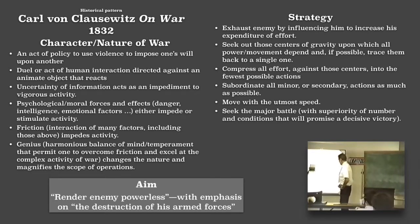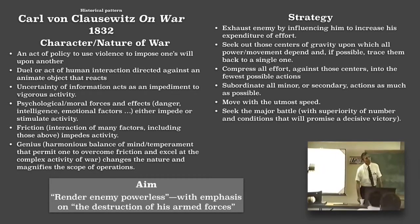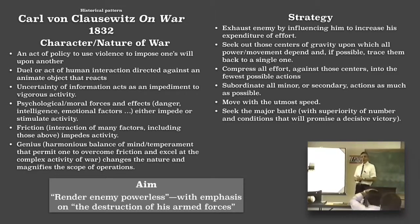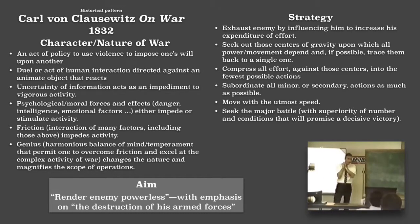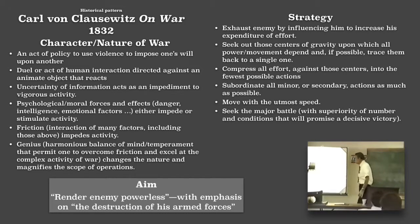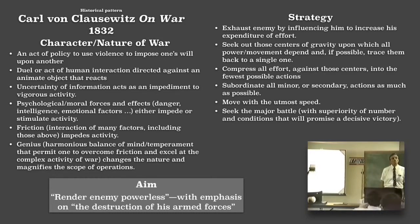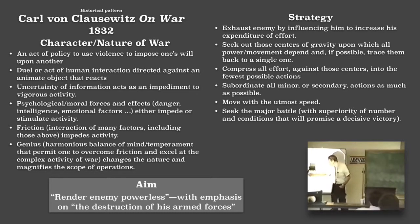What we find out is that Clausewitz is involved very heavily on the character and nature of war. And he ends up with the same statement: war is an act of policy — use violence to impose one's will upon another. If you think about that, you recognize you've got an opponent you're working on — it's not just some inanimate object. He makes the point: it's a duel, an act of human interaction directed against an animate object that will react. And if you don't know that, that act adds what he calls uncertainty. Uncertainty of information acts as an impediment to vigorous activity — if you're uncertain, you have doubts, it acts as an impediment to activity. He describes the psychological aspects of uncertainty, psychological and moral forces. He describes three kinds: danger, intelligence, and emotional factors.